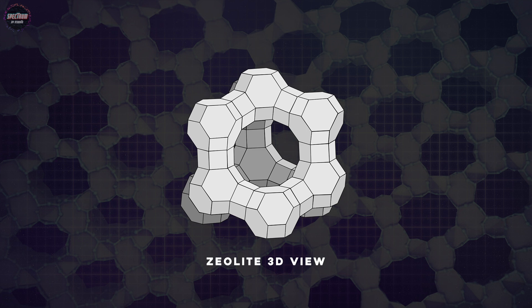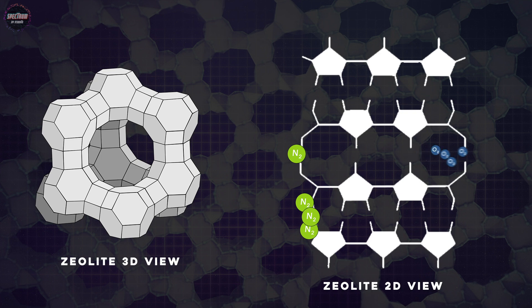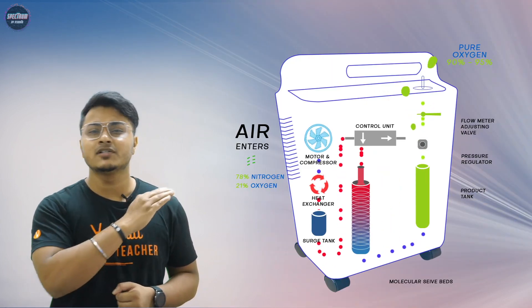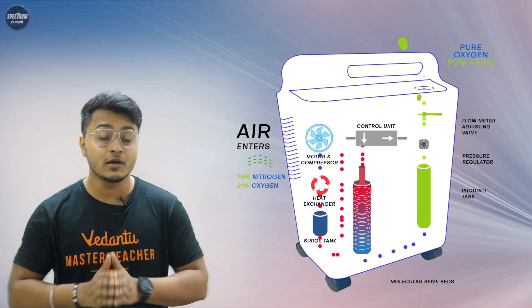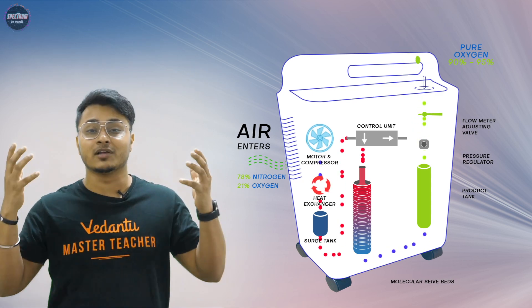Zeolite ka molecular structure hi aisa hai ki jab air pass hoti hai, nitrogen ka particle size oxygen se bada hota hai, toh woh zeolite pe adsorb ho jaata hai aur aage nahi nikal paata. Jiski wajah se now we have 90 to 95 percent pure oxygen coming out of the cylinder, while nitrogen remains trapped inside.